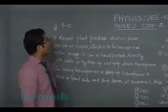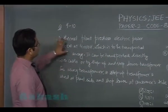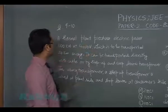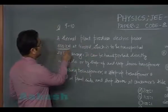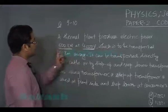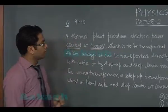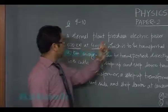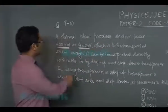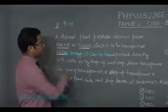This comprehensive problem says a thermal plant produces electric power 600 kilowatt at 4000 volt. This specification is at the production point. This is to be transported 20 kilometer away where the electricity is used.